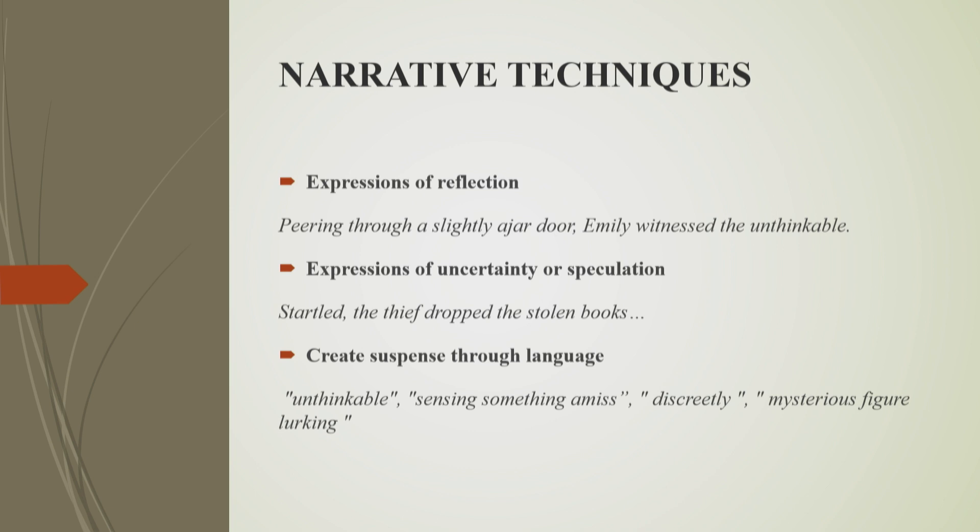Expressions of uncertainty or speculation can help create the mood and tone in the story. For example, 'Startled, the thief dropped the stolen books.' By skillfully employing this technique, you can create a gripping narrative that keeps readers on the edge of their seats, eager to discover what happens next. Uncertainty and speculation are powerful tools in narrative writing as they create intrigue, suspense and engage readers in the story.